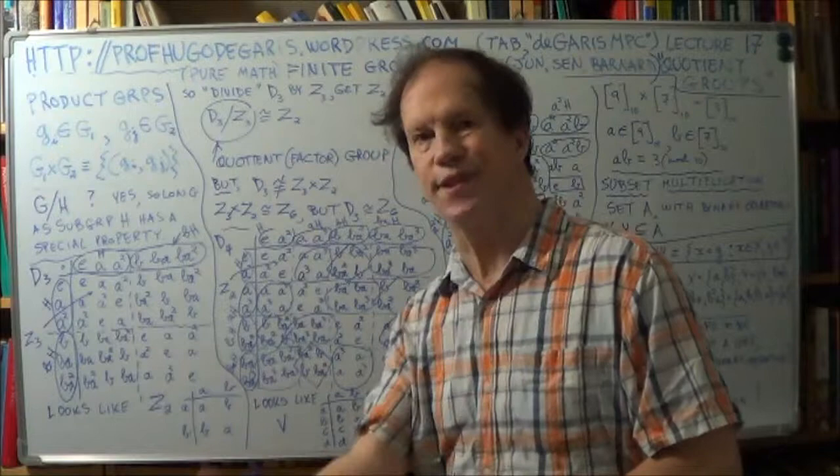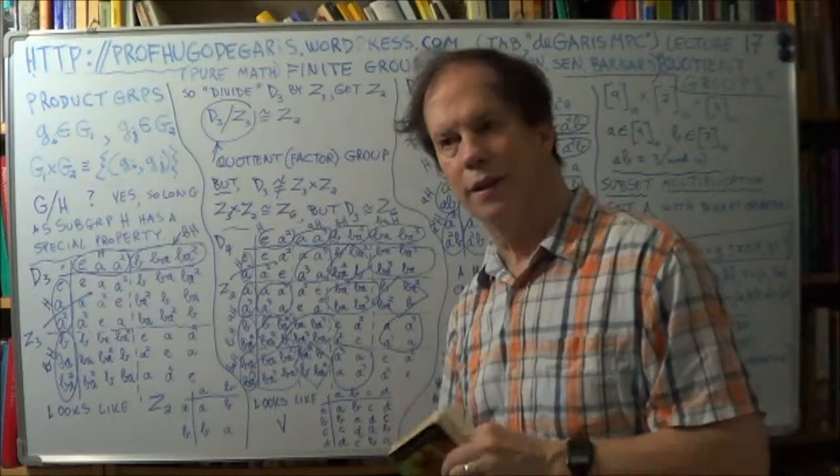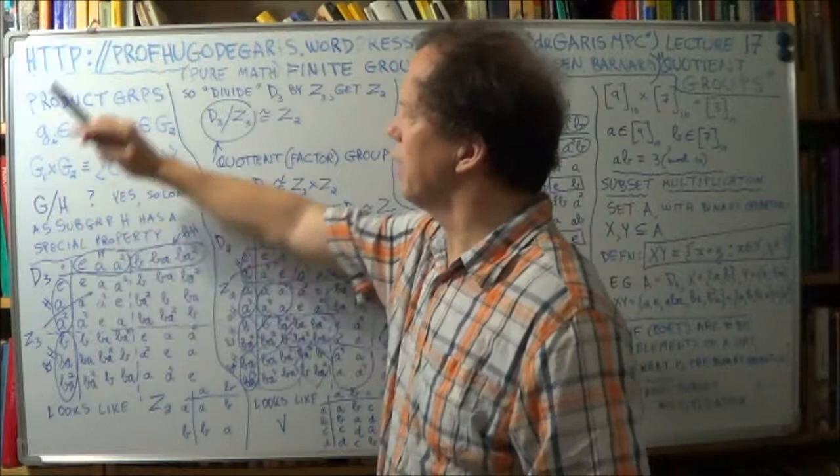then there are techniques to extract a smaller group. And these smaller groups are called Quotient Groups, like the result of a division. So, in a sense, you're dividing a group by another group, in a manner of speaking. Now, it's just an analogy.